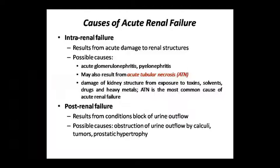Intra-renal failure involves acute damage to the renal structure. Possible causes include acute glomerulonephritis or pyelonephritis, and acute tubular necrosis, also known as ATN. The kidney structure can also be damaged by toxins, solvents, drugs, or heavy metals. Acute tubular necrosis is a common cause of acute renal failure.